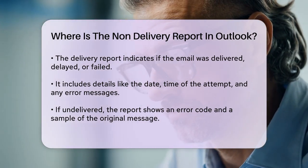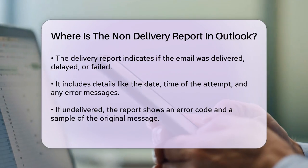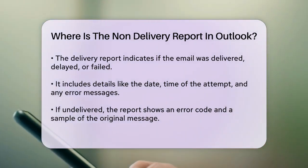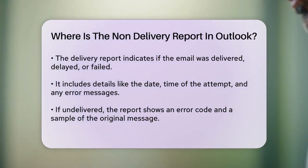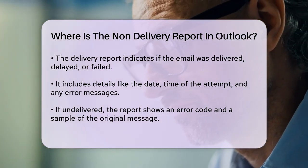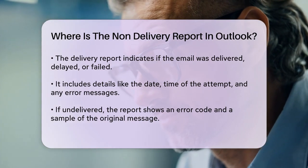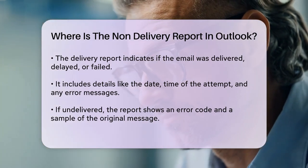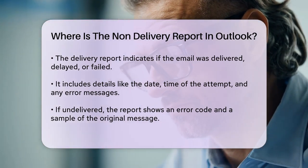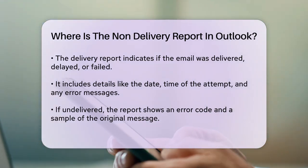For example, if the email was not delivered, the report will show you the error code and a sample of the original message. This can be really helpful in troubleshooting why the email didn't get through. To get more specific details, you can also filter the results by date range or error code, which helps you narrow down the issue.